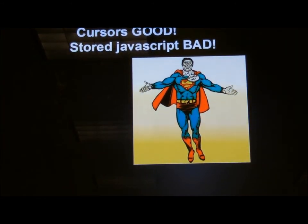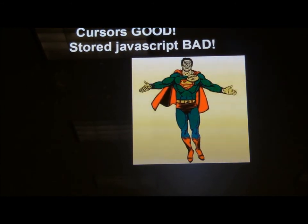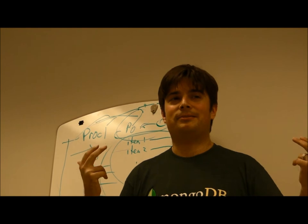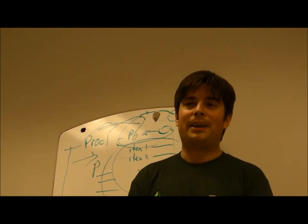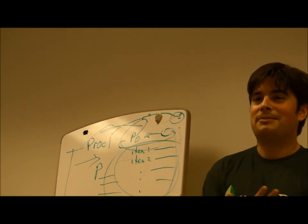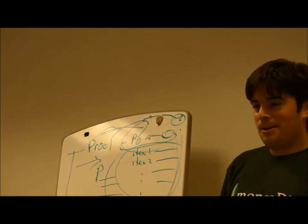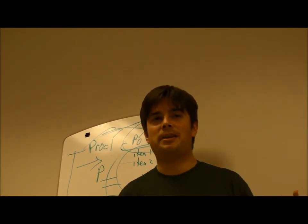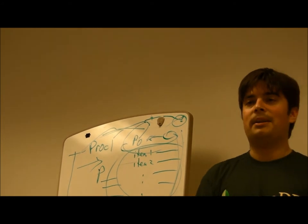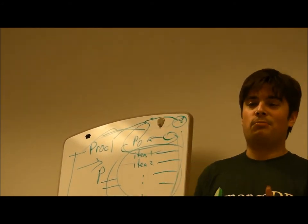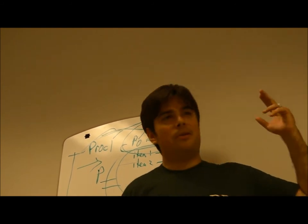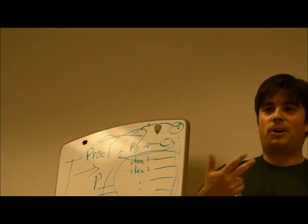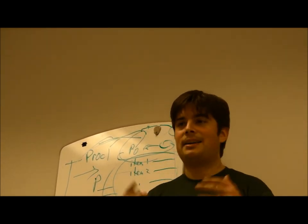Another thing that might blow your mind: cursors are good, stored JavaScript is bad. In relational databases, a cursor is something to be avoided because relational databases are about set-based algebra, and cursors are just doing everything in a loop manually. But every time you run a query in MongoDB you get a cursor back. The cursor is your result set — more like a DB reader. It's a read-only thing and it's what you get after your query is done.